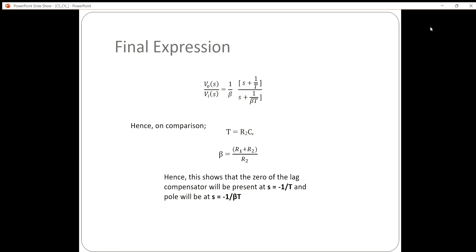Hence, this shows that the zero of the lag compensator will be present at s = -1/τ, and the pole will be located at s = -1/(βτ).